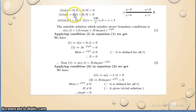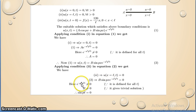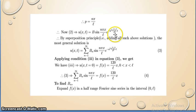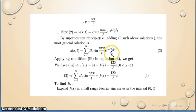Applying boundary condition 2, put x = L: B·sin(pL)·e^(-a²p²t) = 0. Since B ≠ 0 and the exponential ≠ 0, we need sin(pL) = 0, so pL = nπ, giving p = nπ/L. Substituting p into the solution: u(x,t) = B·sin(nπx/L)·e^(-a²n²π²t/L²). The general solution is u(x,t) = Σ(n=1 to ∞) Bₙ·sin(nπx/L)·e^(-a²n²π²t/L²), which is equation number 3.